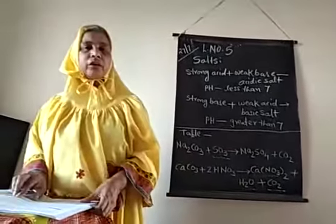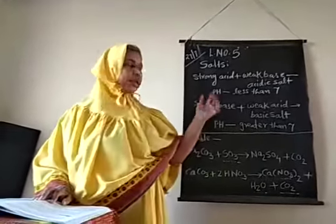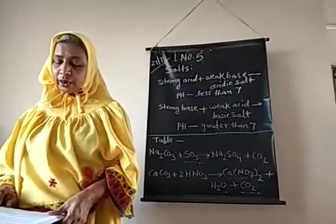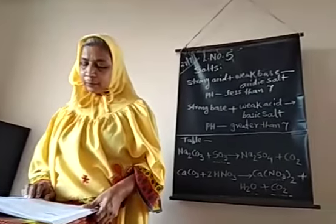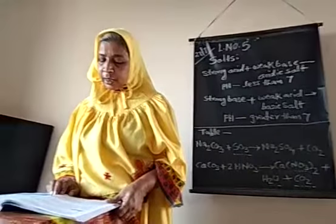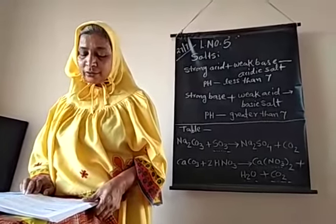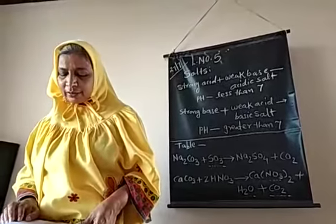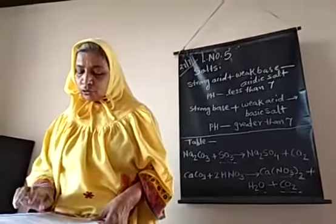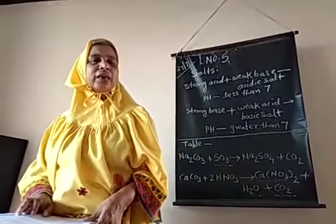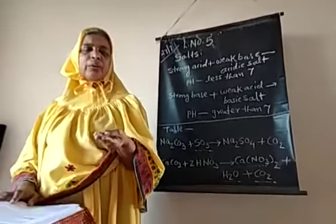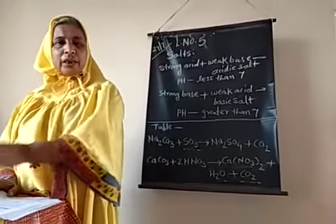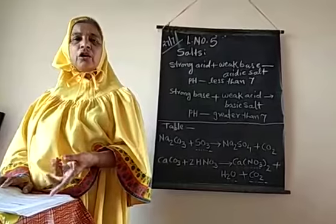One activity is given in the textbook. I am reading that activity and then I will explain these three types of salts. Prepare 10 ml aqueous solution from 1 gram of each: sodium chloride, ammonium chloride, and sodium bicarbonate. Measure the pH of each solution by means of pH paper. Are the values the same for all three? Classify the salts based on the pH value. When we use pH paper to test their pH value, the material is divided into three categories: acidic salt, basic salt, or neutral salt.